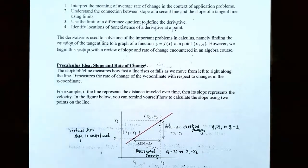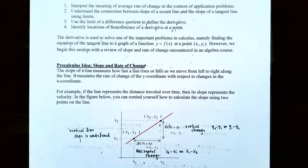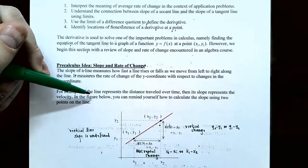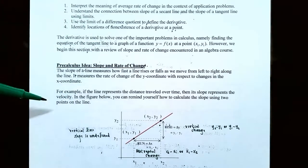The slope of a line, if you remember from an algebra class, measures how fast a line either rises or falls as you move from left to right along the graph. It measures the rate of change of the y coordinate with respect to changes in the x coordinate — rise divided by run. For example, if a line represents the distance traveled over time, the slope would represent the velocity.